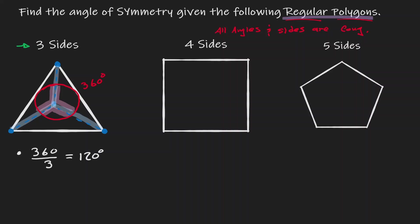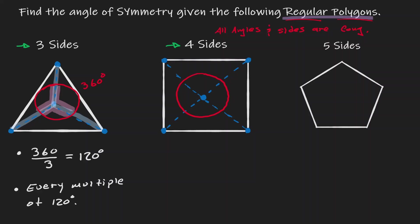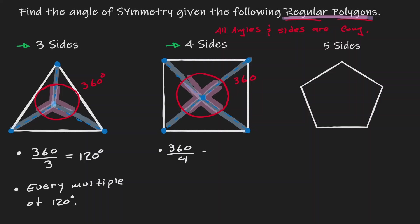Therefore, if we rotate this triangle every 120 degrees, we will rotate the figure into itself. Now let's consider our square. Let's find the center of this figure and connect the center to every single vertex. The same idea holds true. If we build a circle around the center point — that's 360 degrees — when we consider the lines connecting the center to every vertex, notice that we have broken down the circle into four equivalent pieces: the upper, the left, the bottom, and the right. Because it's a regular polygon, every one of those pieces is congruent. We can find the measurement for each one: that will be 90 degrees. So therefore, every time we rotate by a multiple of 90 degrees, we will be rotating the figure into itself.